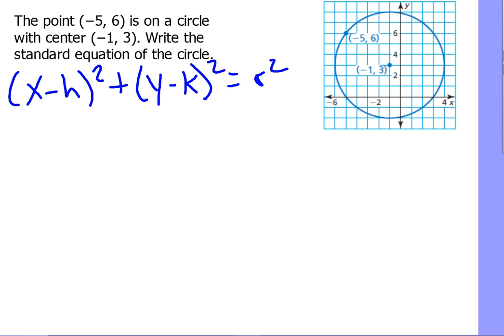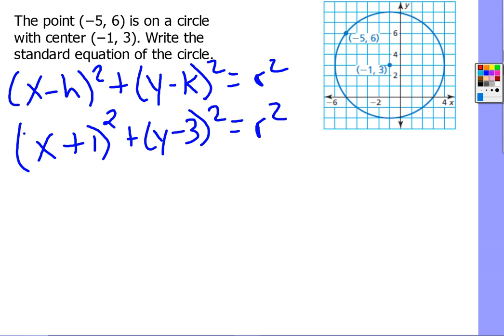In this particular example, we know that the center is going to be negative 1, 3. So that means H will be negative 1 and K will be positive 3. I'm going to go ahead and put that into our equation now. So X minus a negative 1 is a positive, remember opposite of what you see, plus Y minus 3 squared, but we still don't know R squared. So I'm going to leave that as just R squared right now.